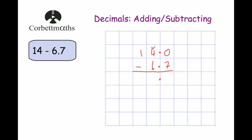Now we subtract. 0 take away 7 we can't do, so we borrow — that becomes a 3 and we carry the 1 over to make 10. 10 take away 7 is 3. Again, 3 take away 6 we can't do, so we borrow — we call that 0 and bring the 1 over there to make 13. 13 take away 6 is 7. So the answer is 7.3. Whenever numbers you're adding or subtracting differ in length — one might have tenths, hundredths, or thousandths — just add zeros to make them the same length. Also be careful to line up units, tens, tenths, and so on in separate columns.